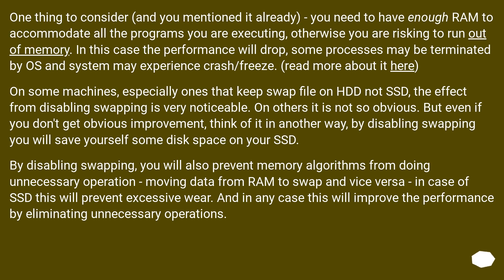On others it is not so obvious. But even if you don't get an obvious improvement, think of it another way: by disabling swapping you will save yourself some disk space on your SSD. By disabling swapping, you will also prevent memory algorithms from doing unnecessary operations — moving data from RAM to swap and vice versa. In the case of SSD, this will prevent excessive wear, and in any case it will improve performance by eliminating unnecessary operations.